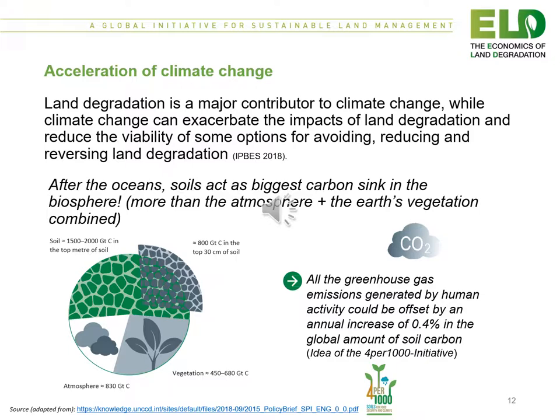Land degradation is also associated with an acceleration of climate change. It is a major contributor to climate change, while climate change itself can exacerbate the impacts of land degradation and reduce the viability of some options for avoiding, reducing or reversing land degradation. Important to note that after the oceans, soils act as the biggest carbon sink in the biosphere — there is more carbon in the soil than in the atmosphere and the earth's vegetation combined. The greenhouse gas emissions generated by human activity could in fact be offset by an annual increase of 0.4 percent in the global amount of soil carbon.